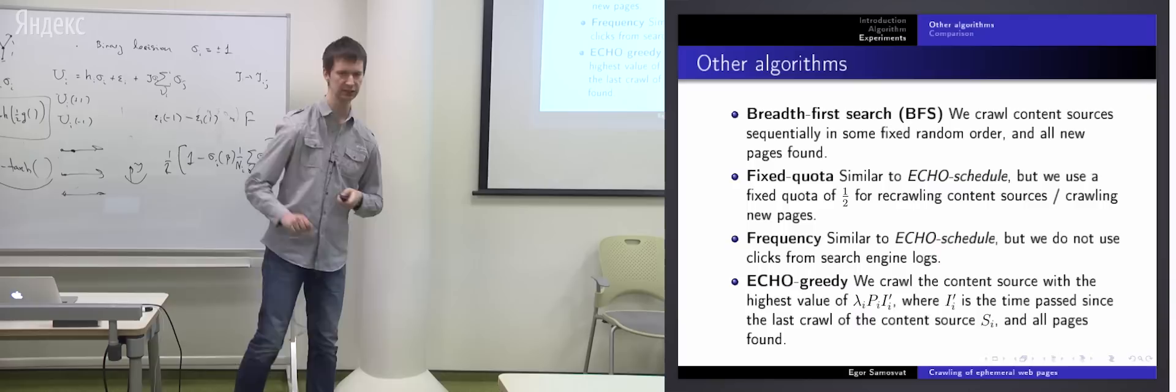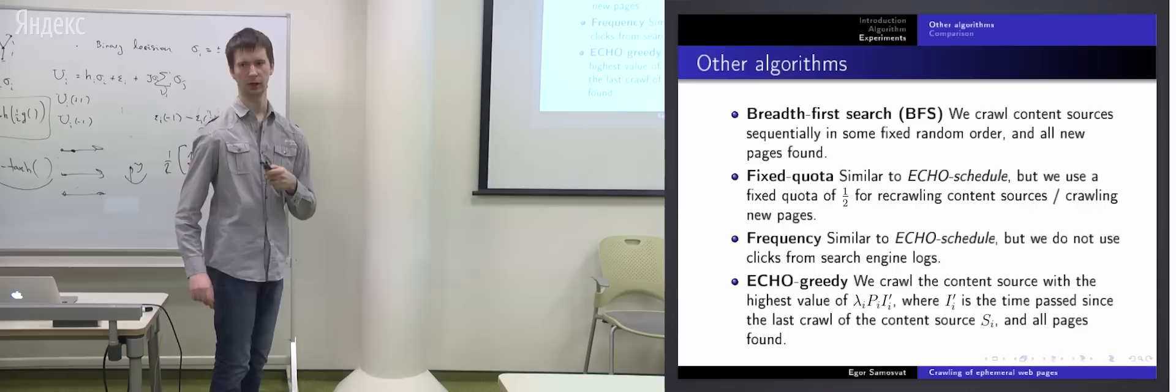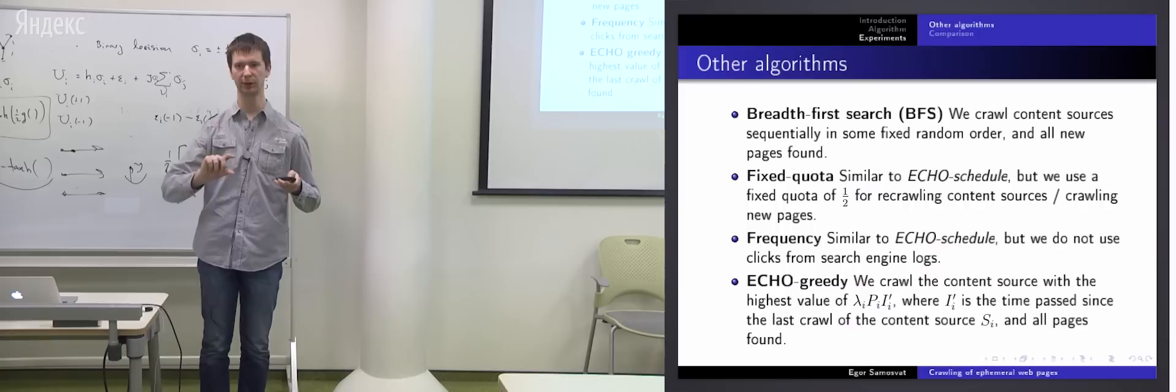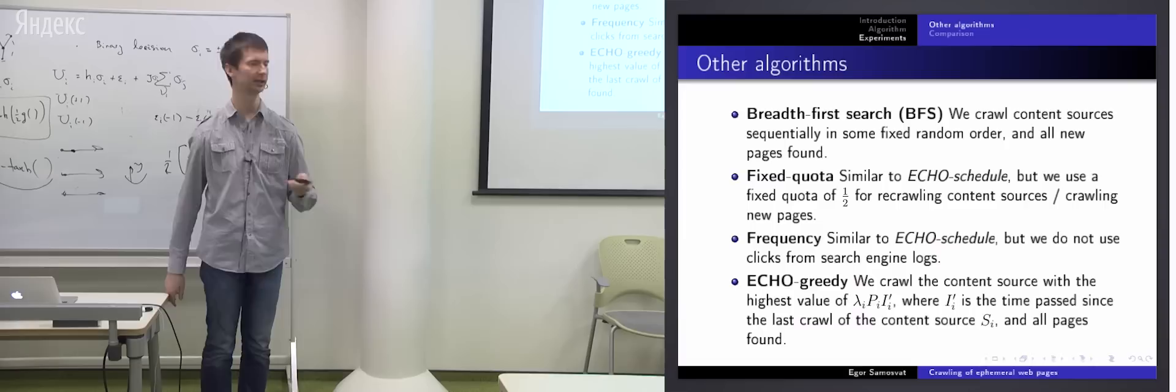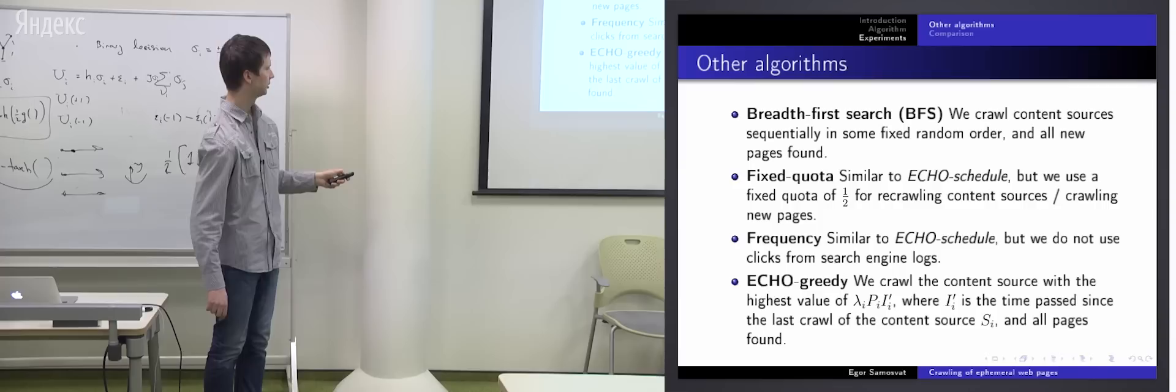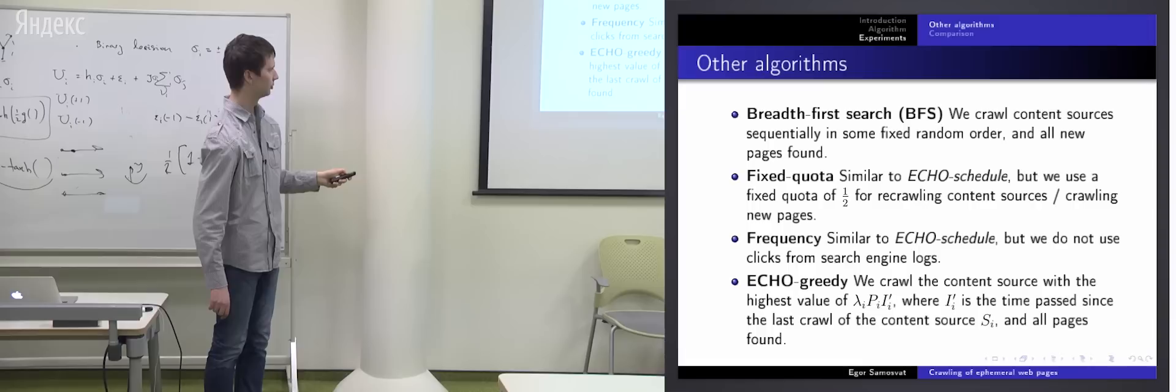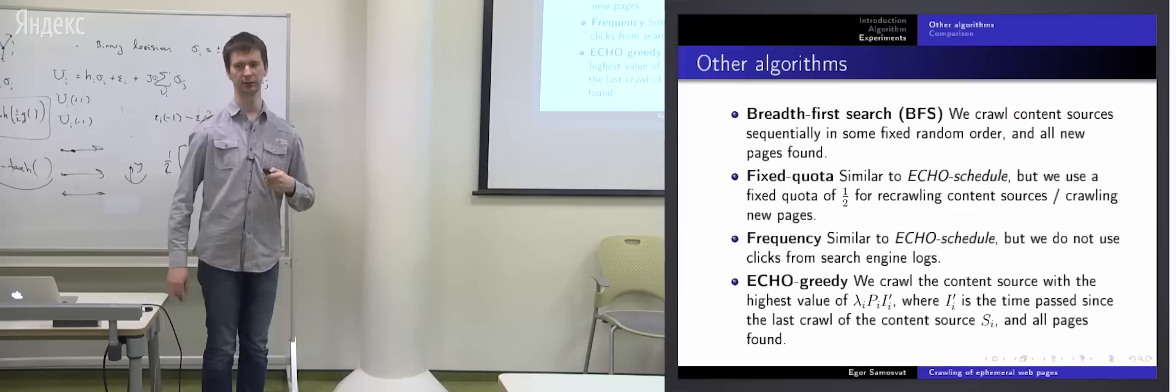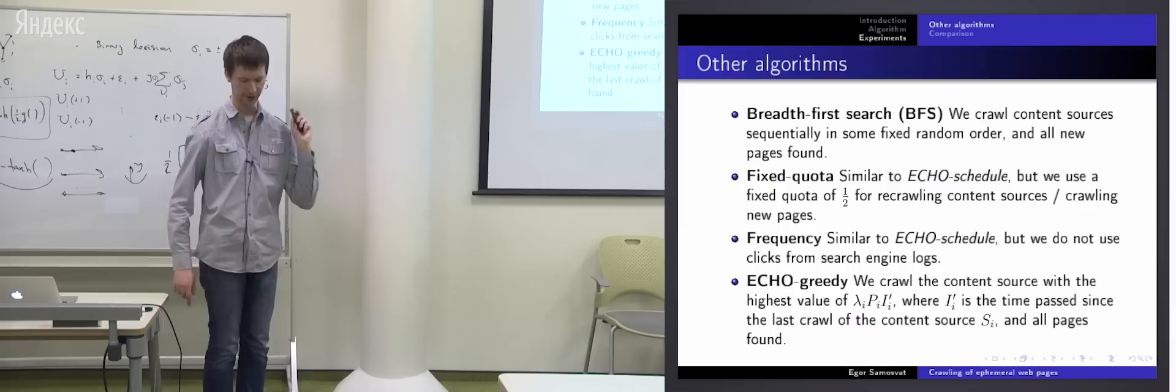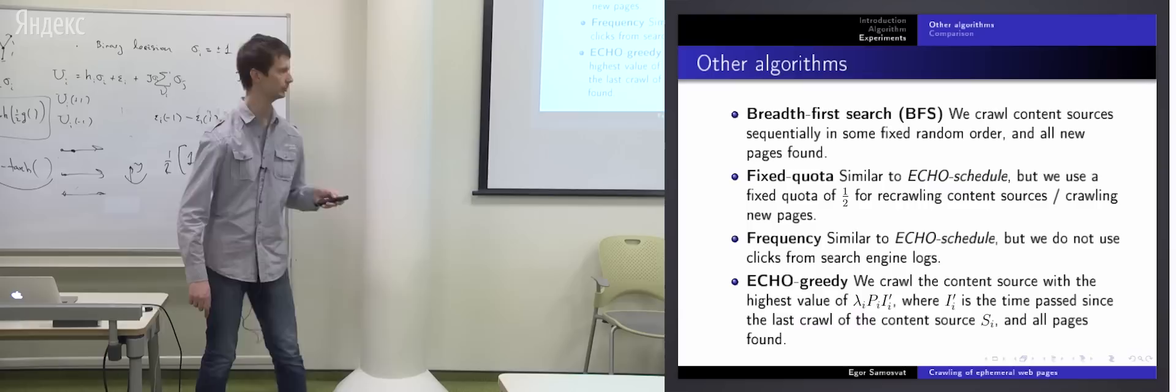And the last one is actually important baseline. Here we didn't solve our optimization problem. We just prioritize content sources by expected profit of web pages which can be found at it, ignoring profit decay. We sort them by this value, this is expected profit. We multiply new pages rate by average profit and by time passed since the previous visit of the webpage. This is baseline echo greedy. Why echo? Echo stands for ephemeral content holistic ordering.